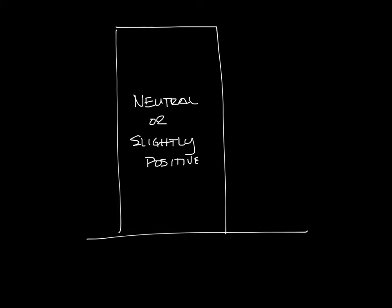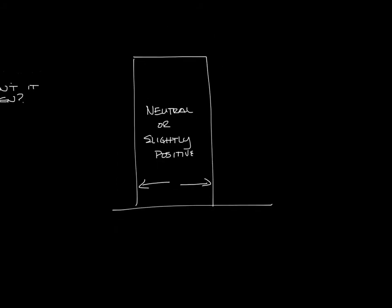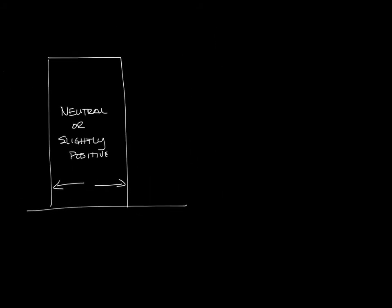So if this is our slightly positive building, the air flow wants to go from the building towards the outside. So let's make a little room and draw a second building. And let's make this building negatively pressurized.